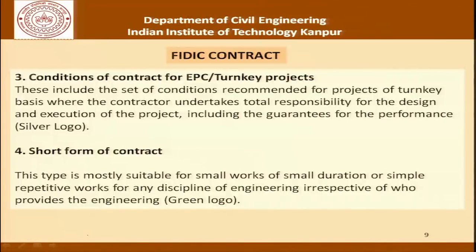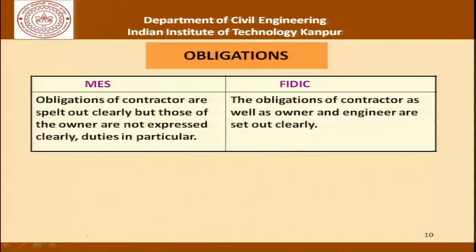Let us now go through examples comparing FIDIC contracting conditions with the MES contract practiced in India. One example is the condition of obligations for different stakeholders — the engineer and the contractor. As far as MES contracts are concerned, the obligations of the contractor are clearly spelled out, but those of the owner are not expressed clearly, particularly the duties to facilitate the progress of the work and enable the contractor to continue in an uninterrupted manner. Whereas in a FIDIC contract, the obligations of contractors as well as the owner and engineer are all set out clearly.